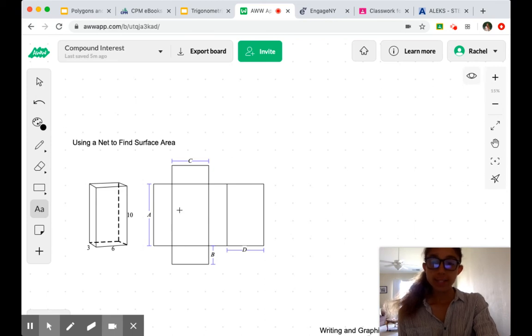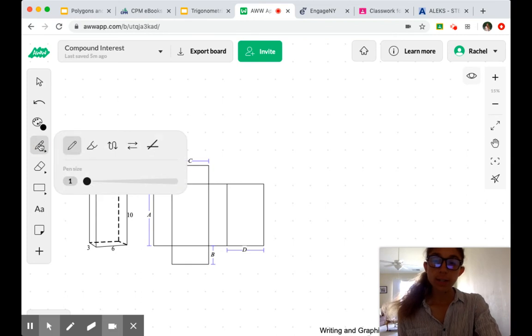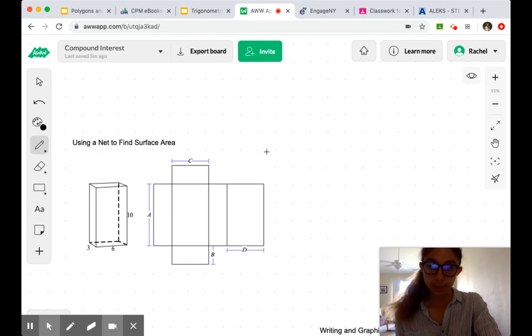We unfolded that box and created what is called a net. Our first step is to determine the measures of each of these sides. We're going to match our values on our net to our values on our closed-up box.